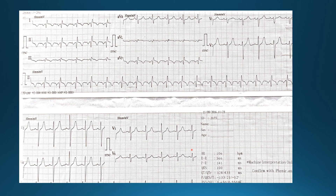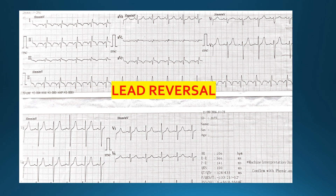Combining all these factors, what is the diagnosis for this case? This was a case of lead reversal — specifically a limb lead reversal. This is occasionally seen in emergency departments when the ECG is performed hurriedly. The case becomes pretty tricky if we do not follow the proper way of attaching the leads to the body. In this case, limb lead I was swapped, and as a result the following changes were seen.